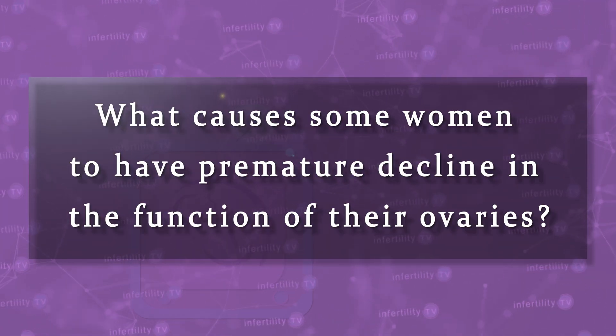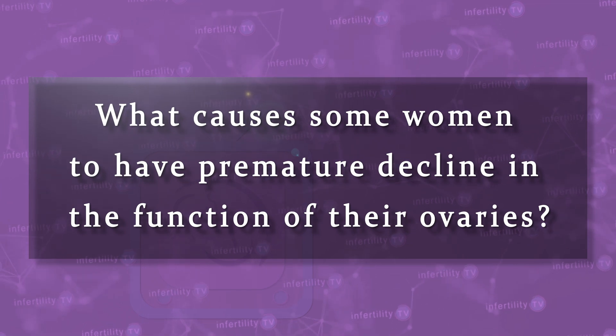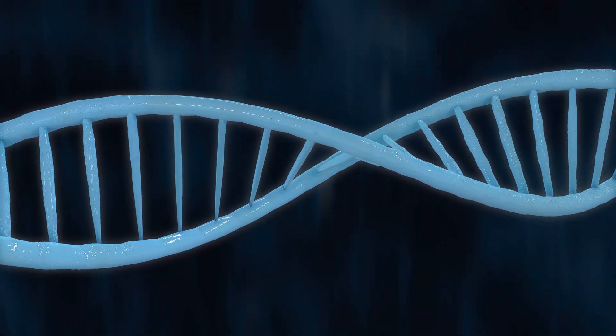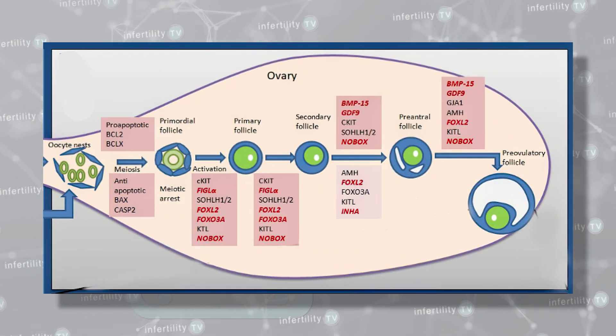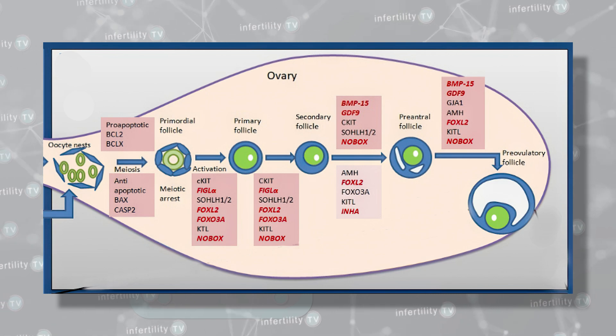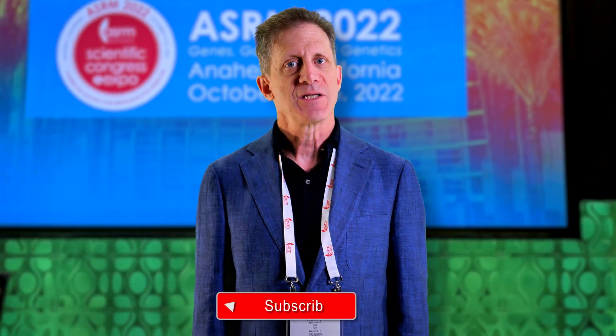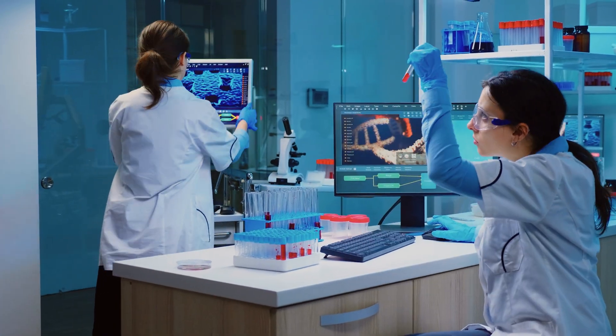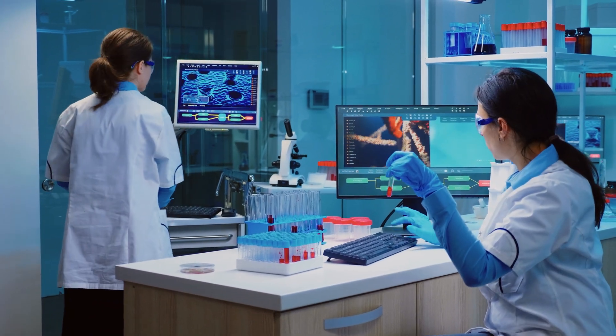What causes some women to have a premature decline in the function of their ovaries? There are a number of causes, but genetics is probably the most important. Genes control every stage of the production and development of eggs and how long they stay around. Mutations and variations in genes will result in some women experiencing a lowering of their reserve at an earlier age. Scientists have discovered hundreds of these genes so far, but more are being discovered all the time.